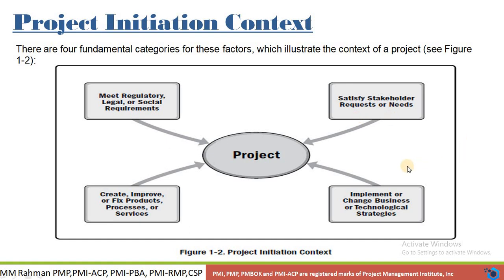Another context is implementing or changing business or technological strategies. For example, if 300 out of 800 computers in the organization are using Windows XP and Microsoft is ending support for that operating system, we need to replace those computers — that requires initiating a project. Also, creating, improving, or fixing a product, process, or service. For example, converting a desktop-based customer service system to a web-based application — that is improving an existing system, so we initiate a project.